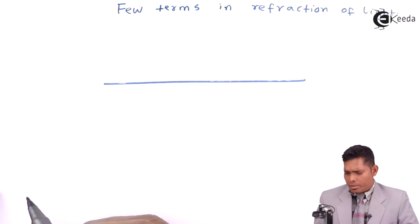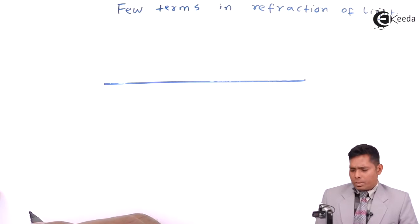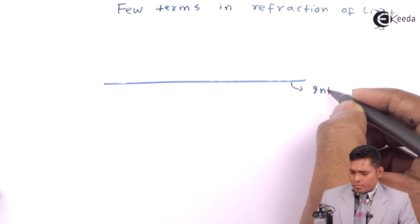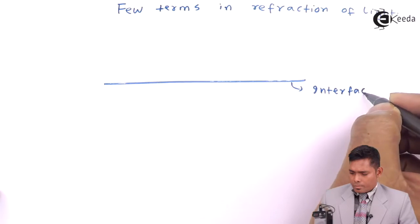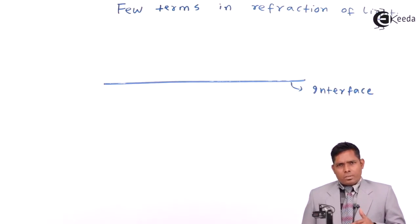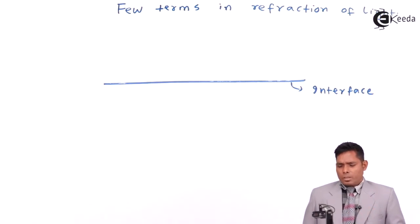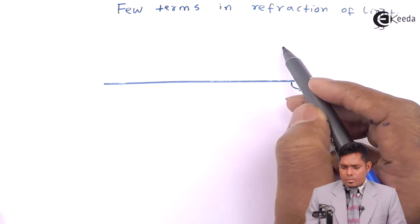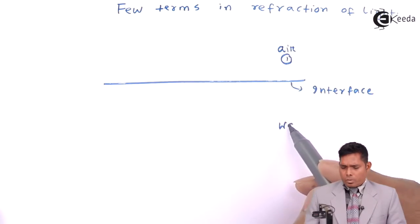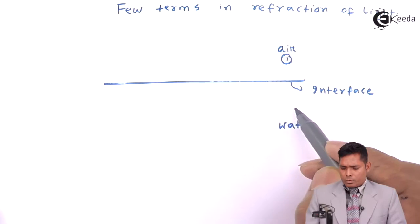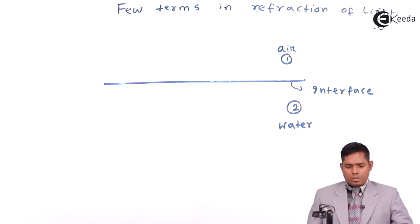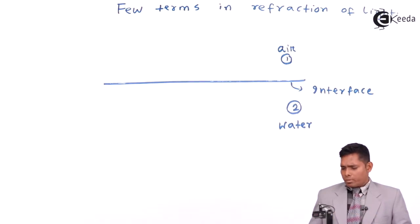This is a surface which separates two media, and this surface is called an interface. Interface is a surface which separates two media. Suppose there is air over here — this is medium one — and water below, medium number two. This is a surface which separates two media.